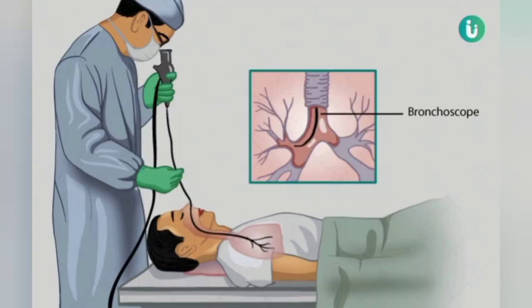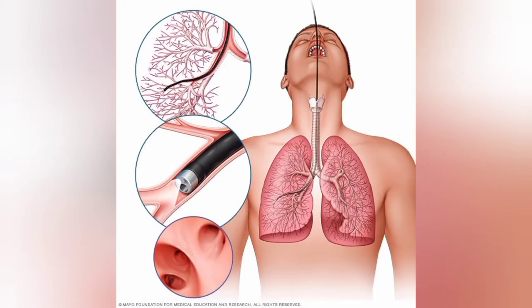Next is bronchoscopy, used to examine problems in the airway and lungs. A flexible bronchoscope is inserted through the nose or mouth, down the throat, and into the lungs. Bronchoscopy helps doctors diagnose the reason behind persistent cough, lung infections, or unusual findings on a chest X-ray. Lung biopsy can also be performed by bronchoscopy if needed.